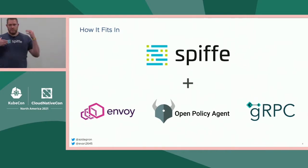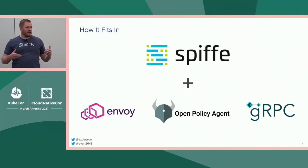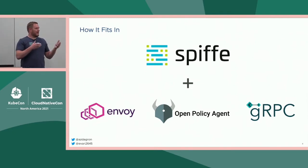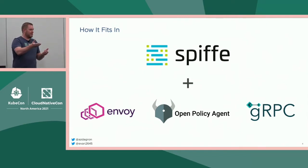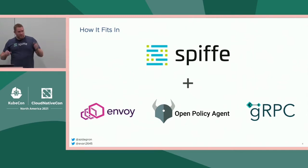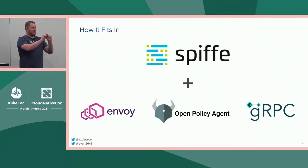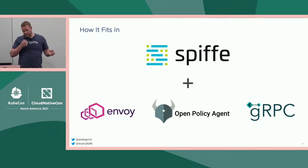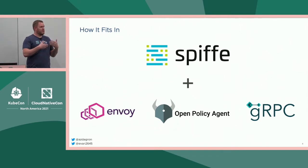Ultimately, what SPIFFE provides is a uniform identity substrate. You're going to get a cryptographically verifiable document. That's what SPIFFE brings you — the document. It's up to you at that point to present that cryptographically verifiable document to another party, assert your identity, allow them to authenticate you, and hopefully you authenticate them in return. SPIFFE is just one small piece of the puzzle — we bring the authentication layer, the identity layer.